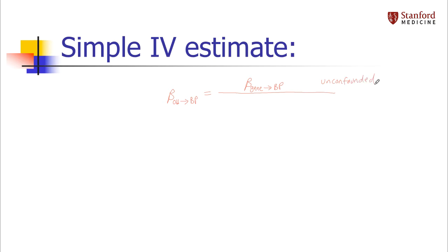I can divide that by the effect of the instrument on the exposure — in this case, the effect of genotype on alcohol. Notice that my numerator is in units of the instrument: what is the increase in blood pressure for a one-unit change in the instrument (a change of genotype)? That's not the units we want. By dividing by the denominator, we are rescaling to get the units we want: the change in blood pressure for a one-unit change in alcohol exposure.